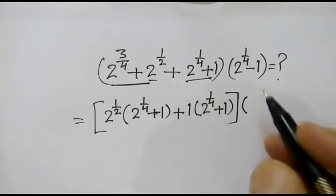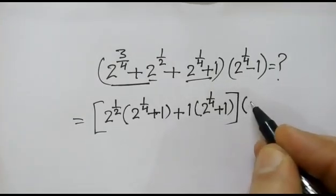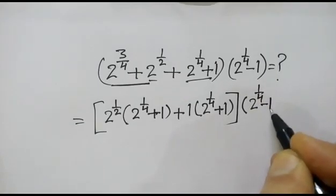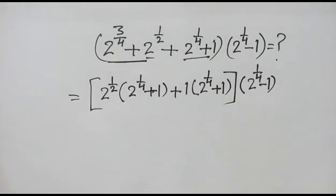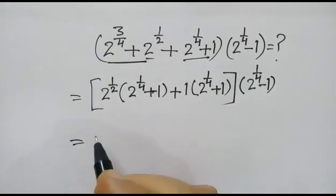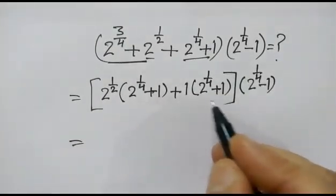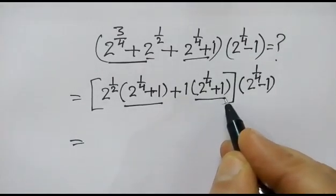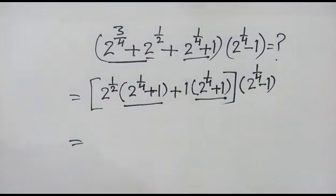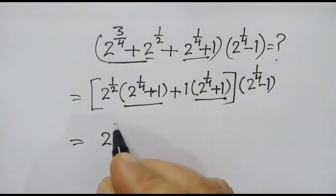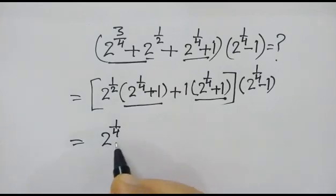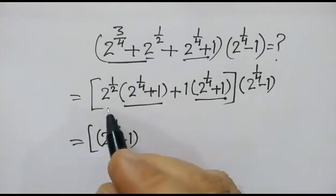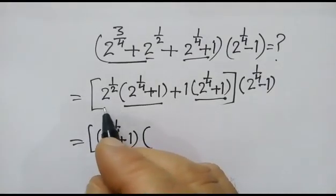This term will be as it is: 2 to the power 1 by 4 minus 1. Now in the next step, 2 to the power 1 by 4 plus 1 — this same term we will take as common. So 2 to the power 1 by 4 plus 1 is common.